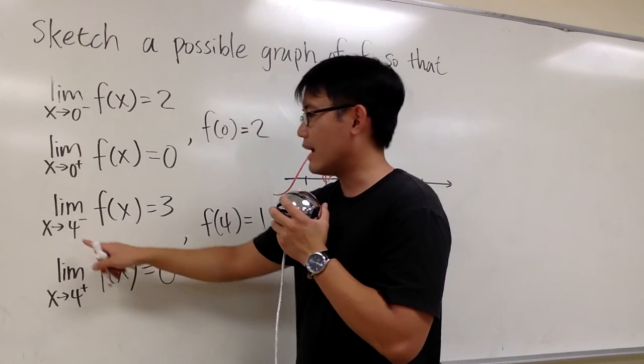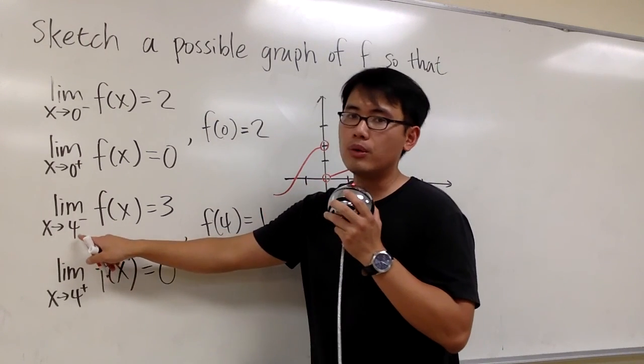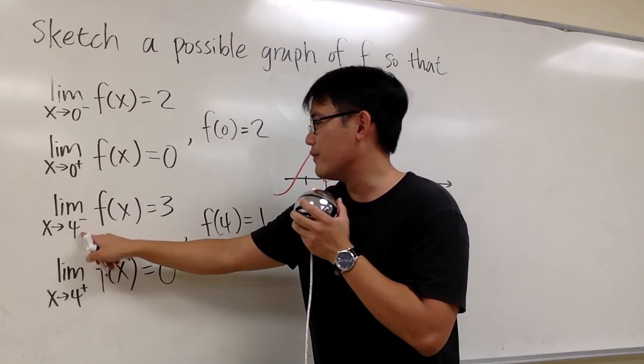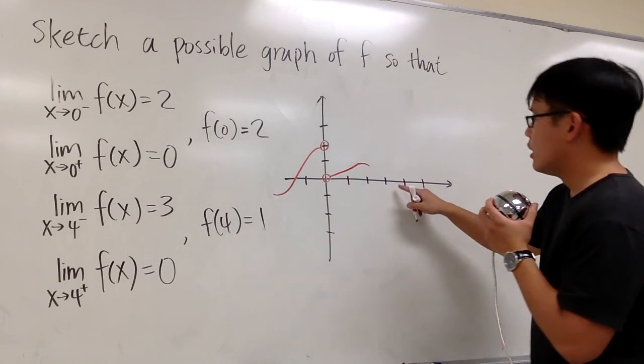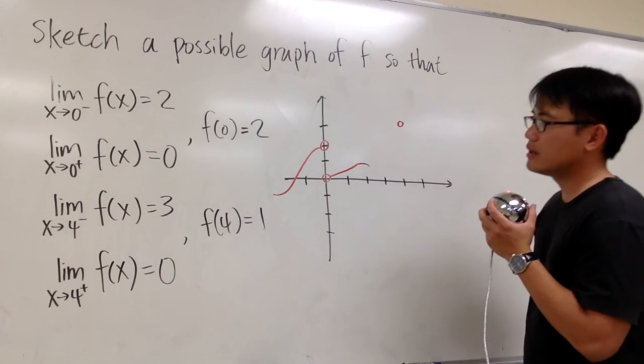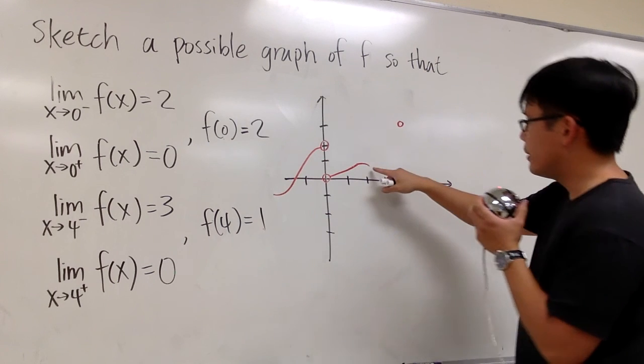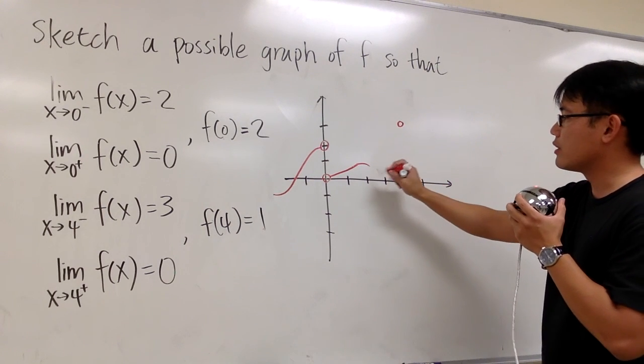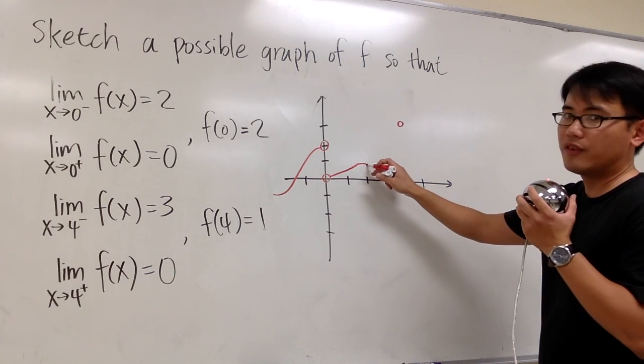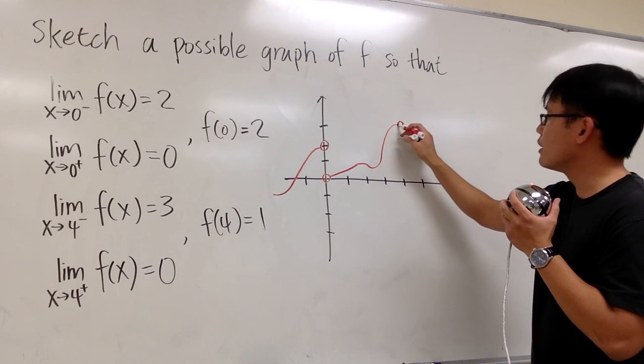And now, let's do this one. We have x approaching to four negative and three. So let's label an open circle at four comma three. Four comma three is right here. Let me open a circle right there. And then, we are starting from the left-hand side. So I can pick it up from this piece right here. And then, I can draw whichever way I want for the graph. But as long as I hit this open circle, that will be good.